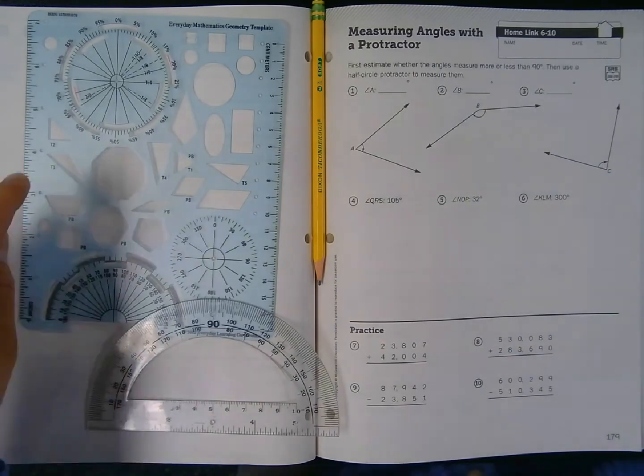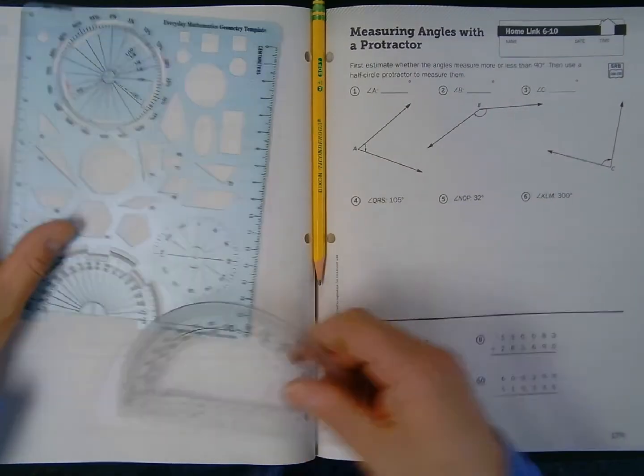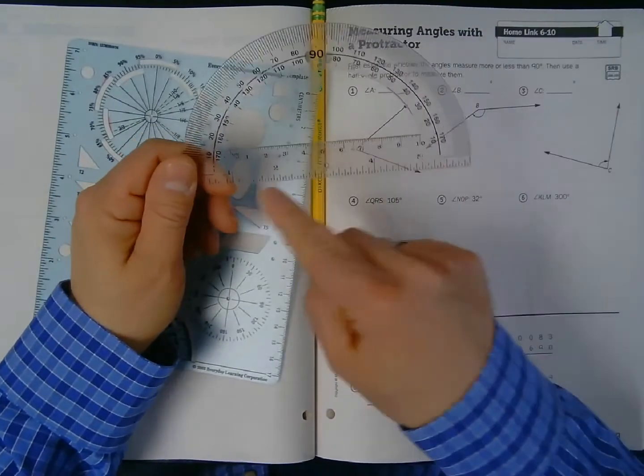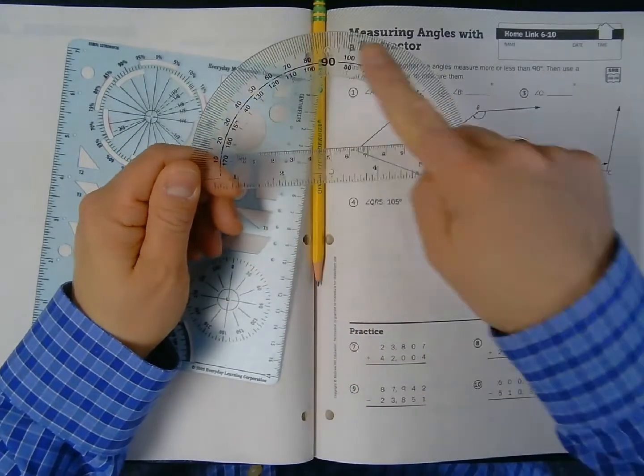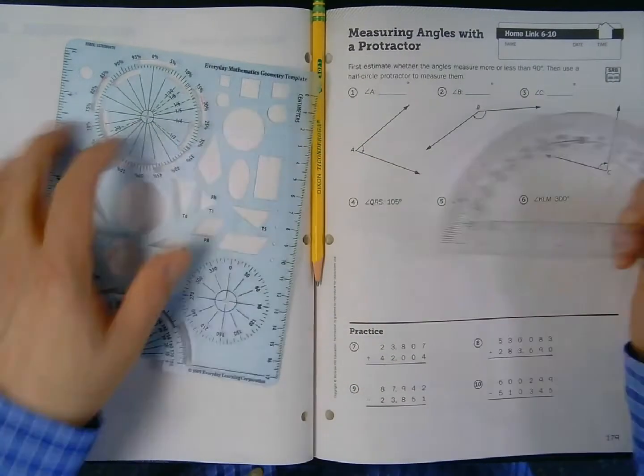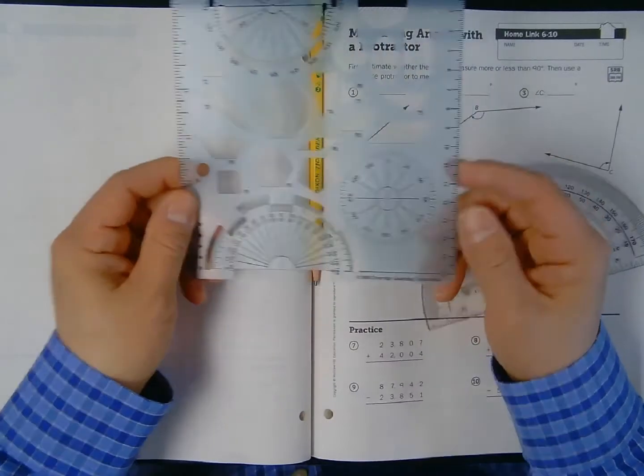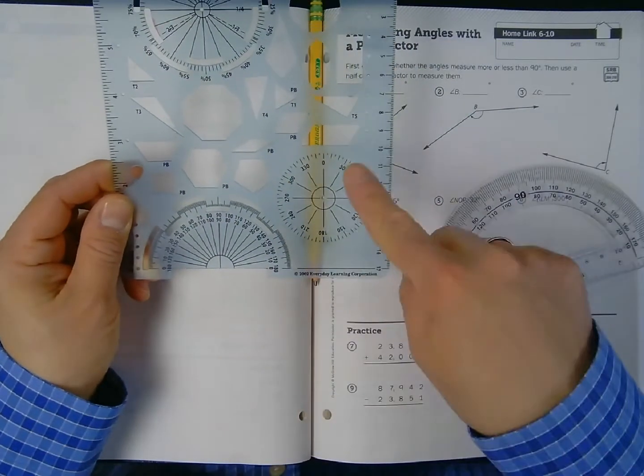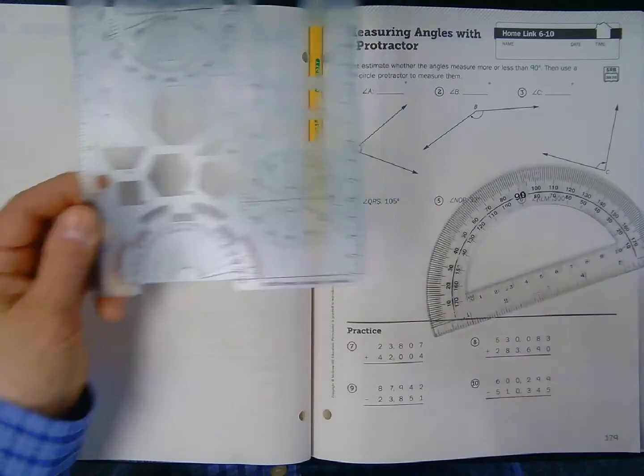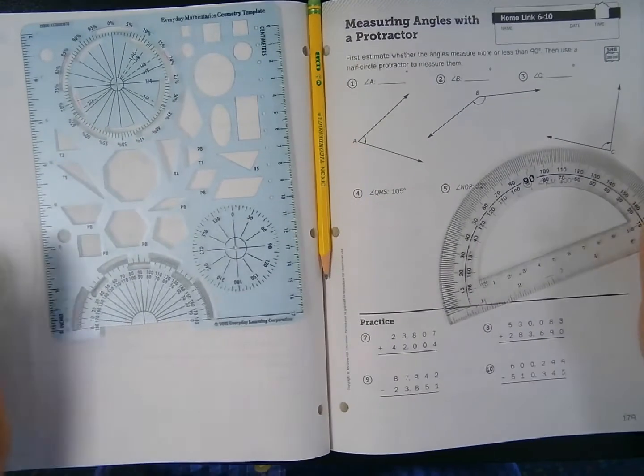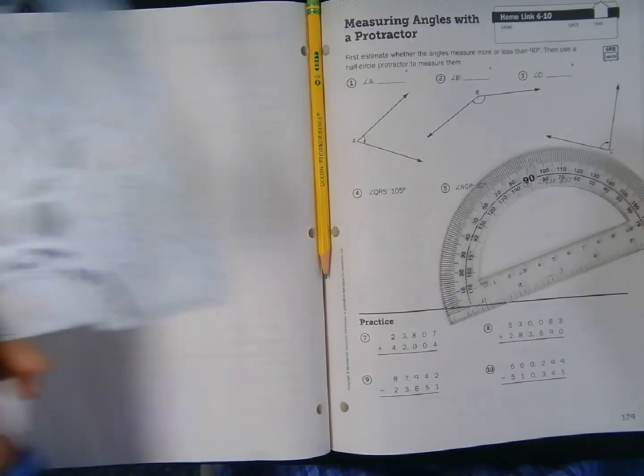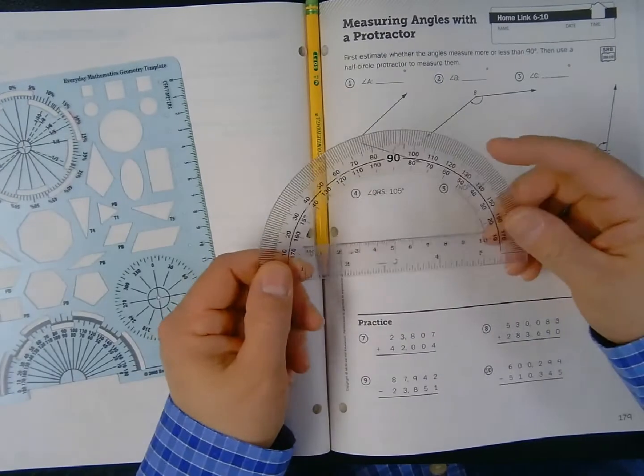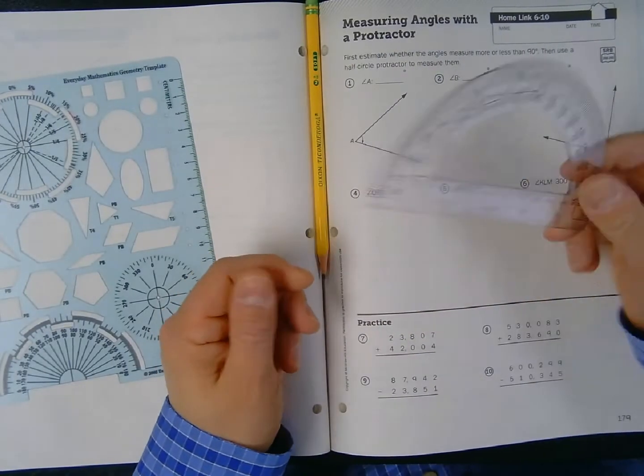So you'll see that I have two versions of a protractor. I have a semicircle protractor that measures halfway around a full circle, and then I have my math template which has both a semicircle and a full circle protractor built in. Since my class was assigned to use their math template, that's the one I'm going to use, but if your teacher is having you use one of these, you can use that too.